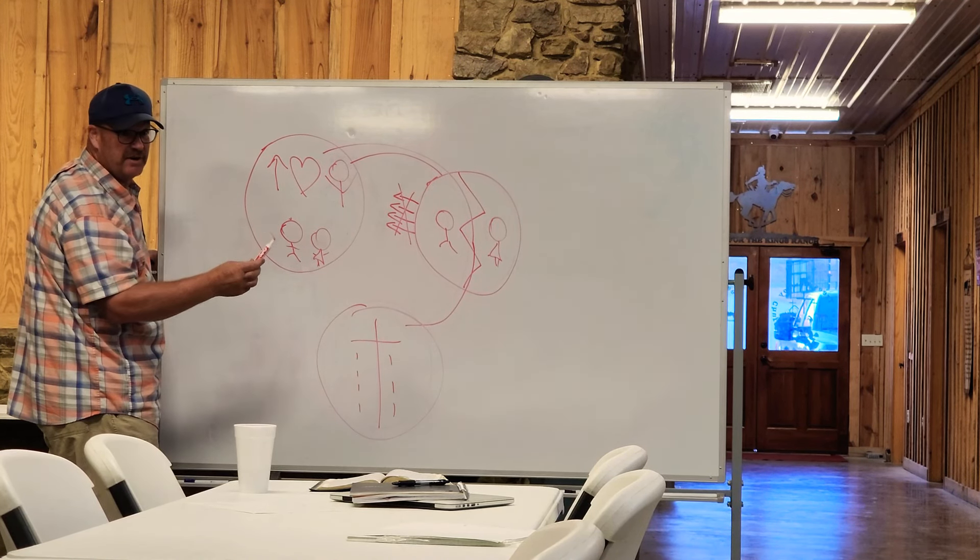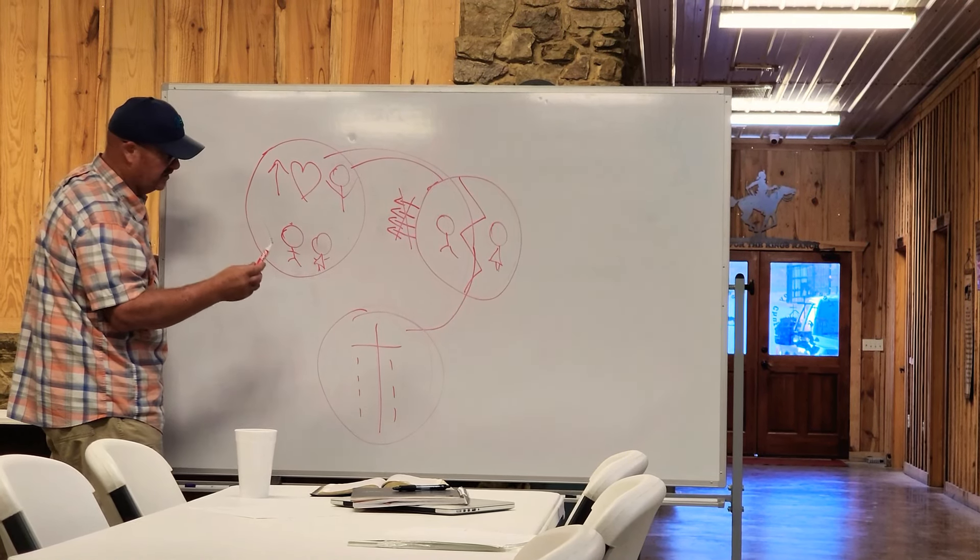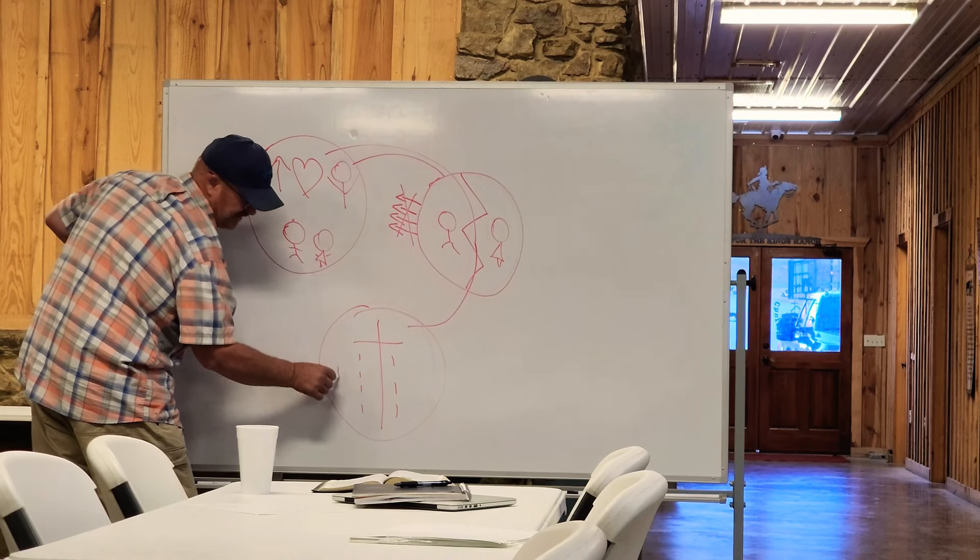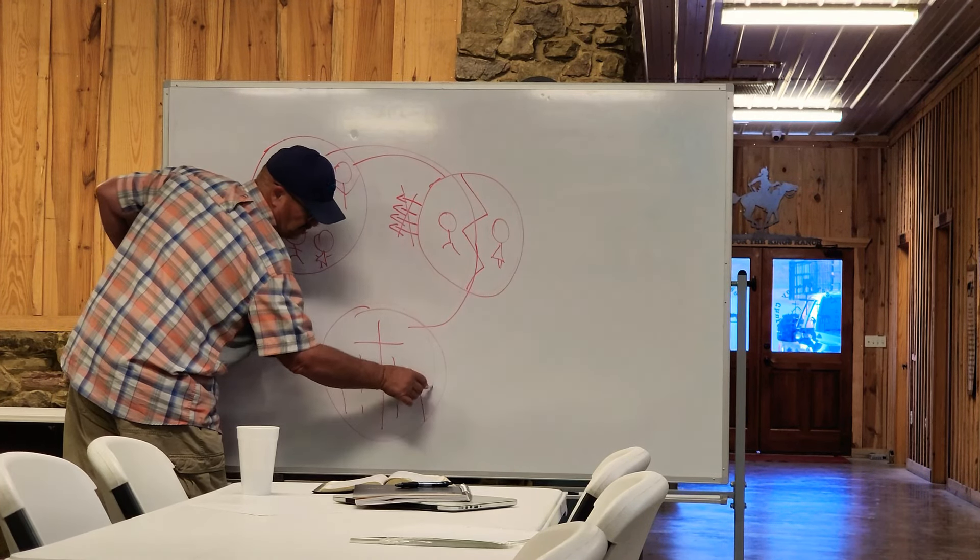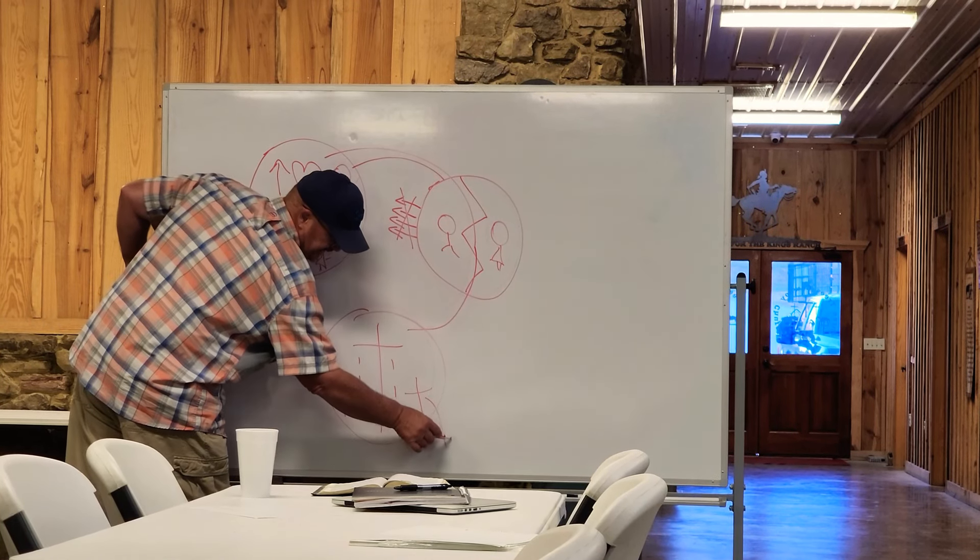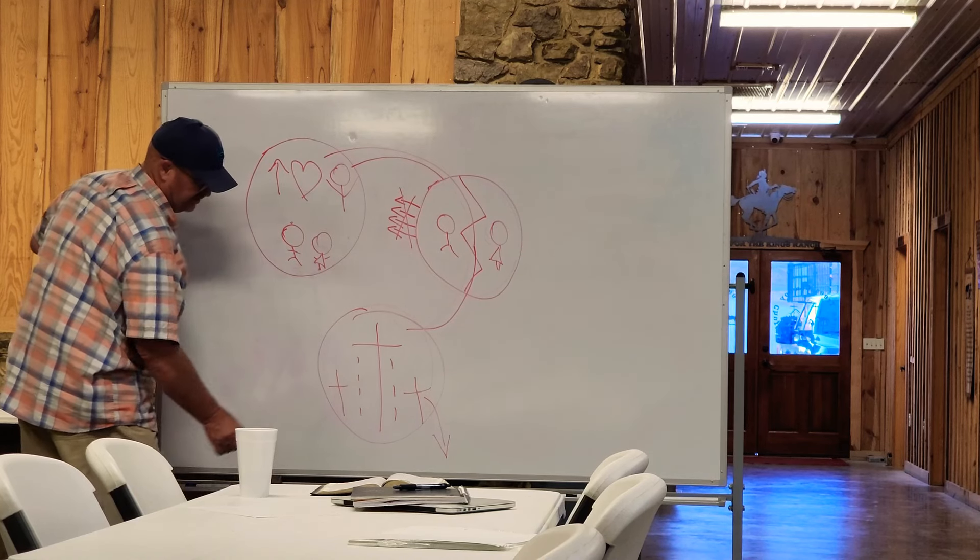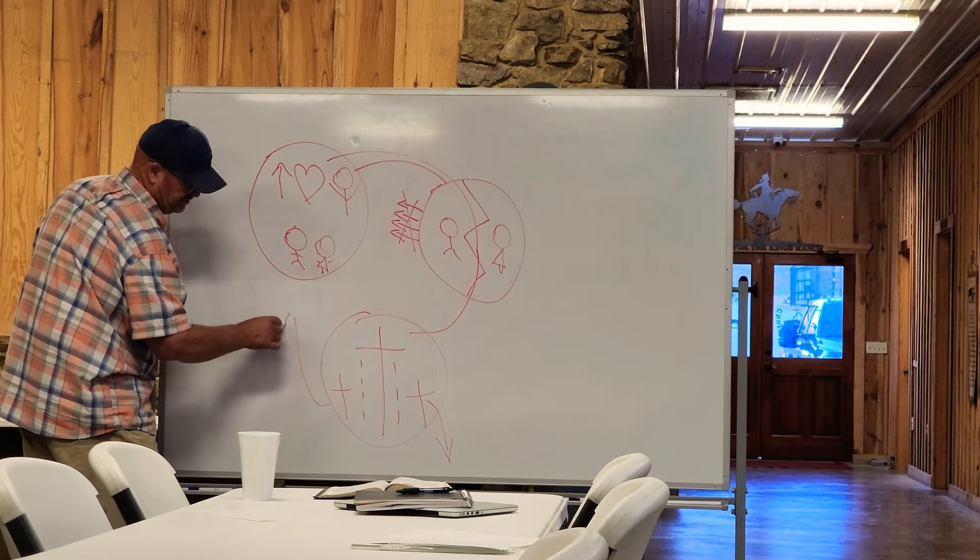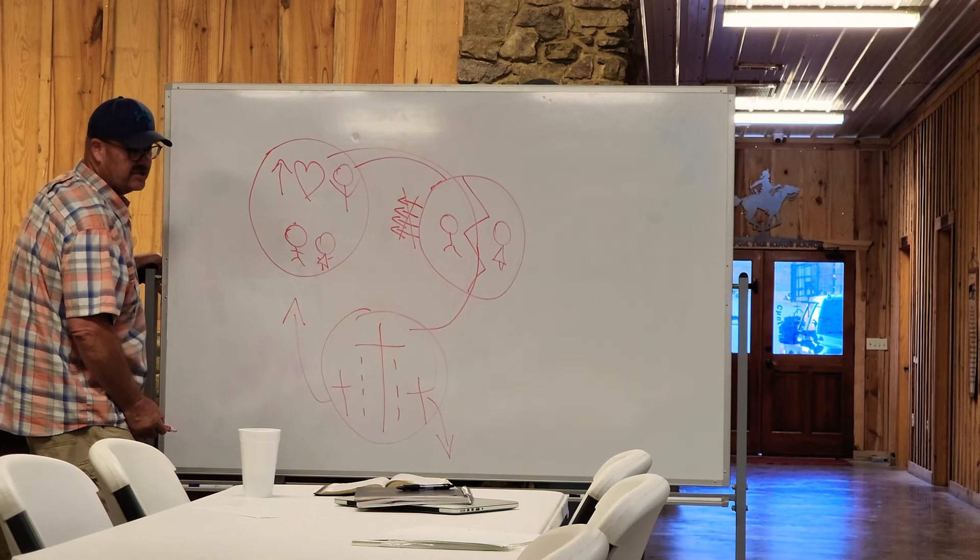Jesus died, was buried, and rose again. And on the same day, there were two guys crucified, one on either side of Him. They were criminals, thieves. One went to paradise, went to heaven with Jesus.